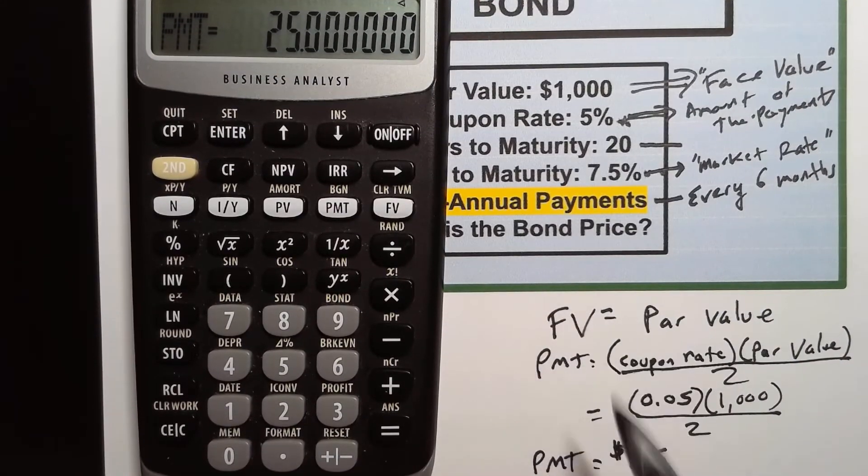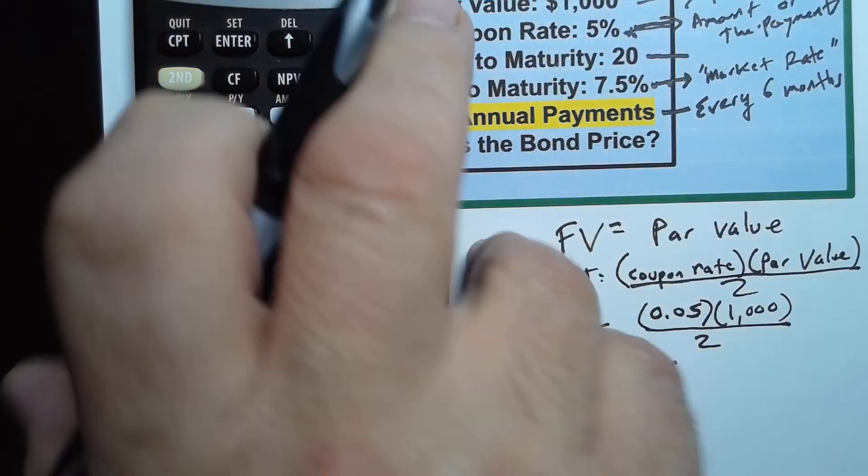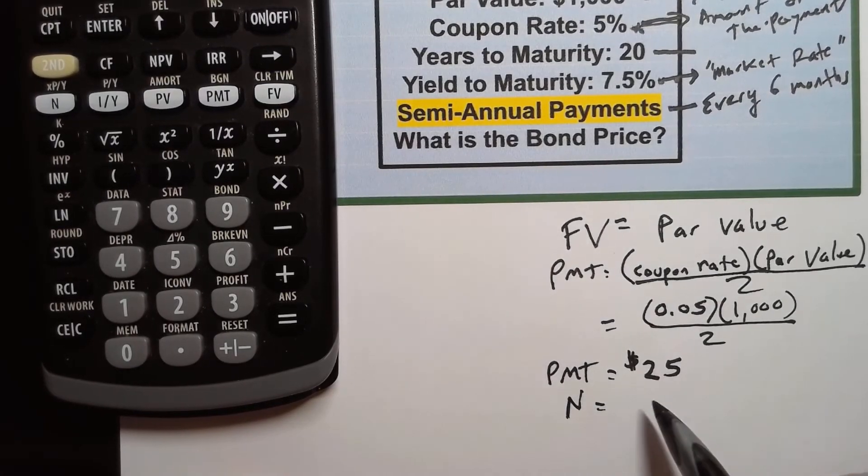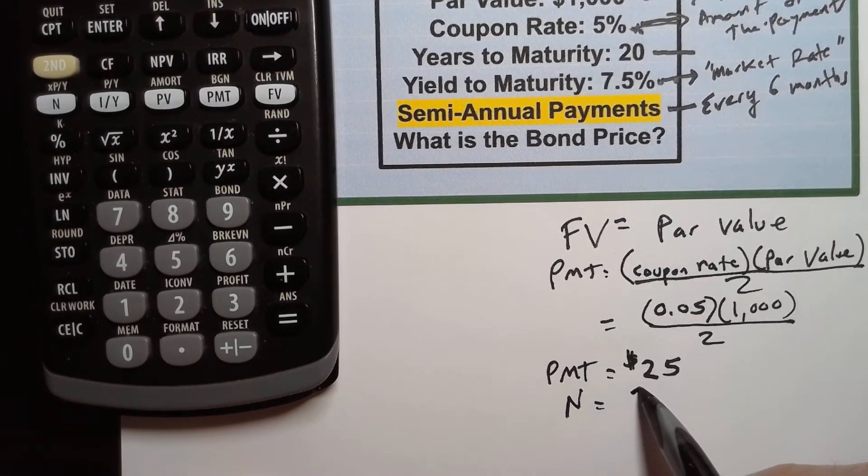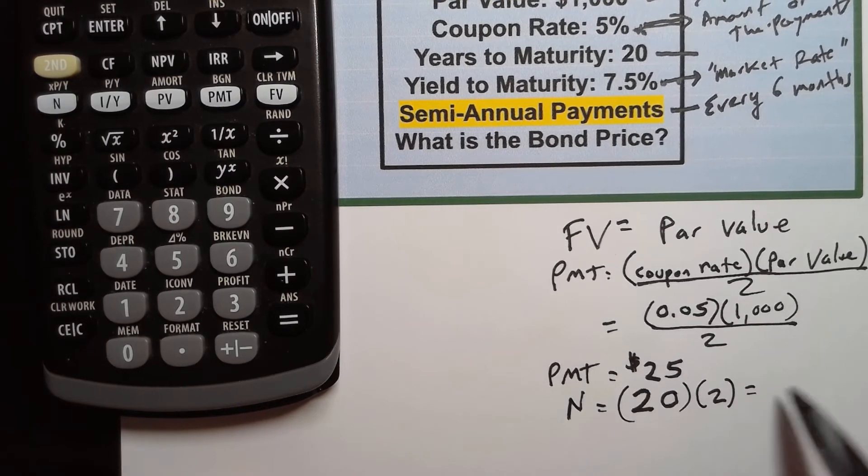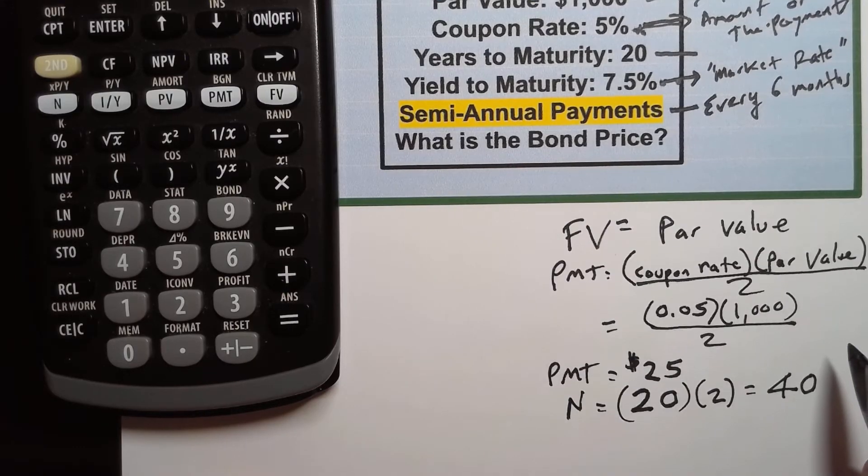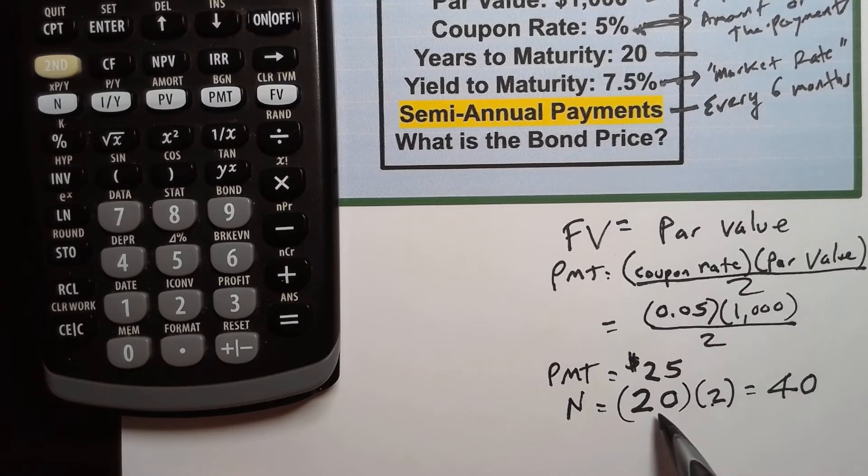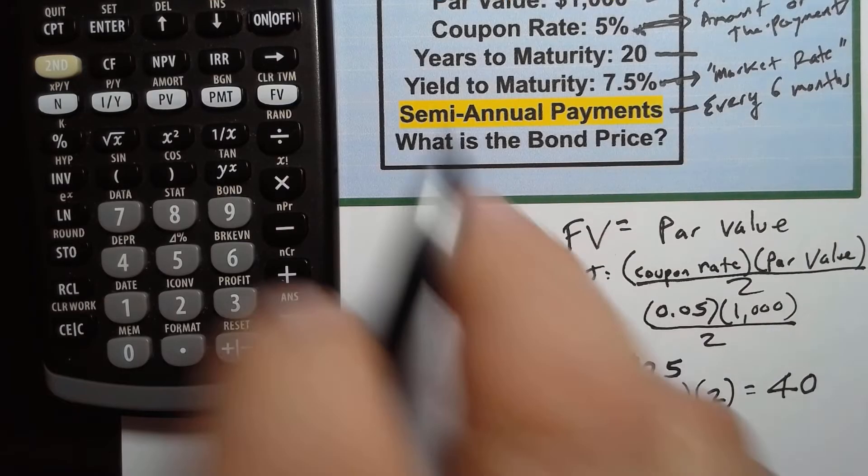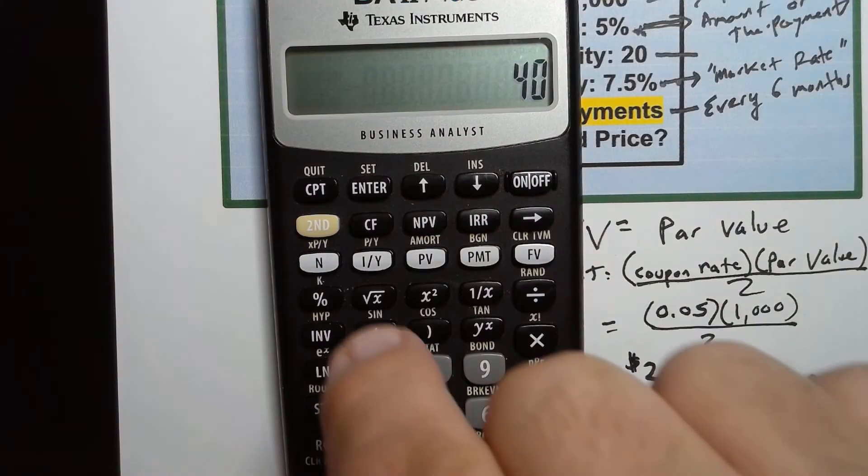The next thing we're going to figure out is the n that's the number of payments or number of periods, in other words the number of times this interest is compounded. We have 20 years to maturity and we know there's two payments a year so we're going to multiply that by the number of payments per year so our n is equal to 40. So the number of payments per year times the number of years gives us our n so I'm going to go ahead and type in 40 and our n.